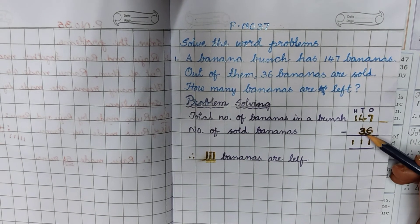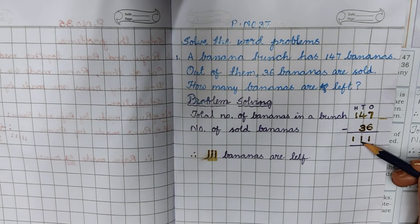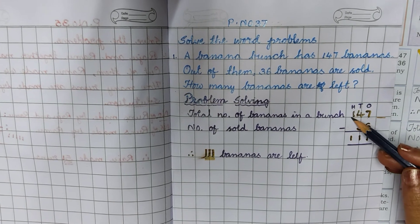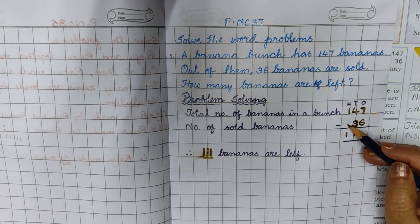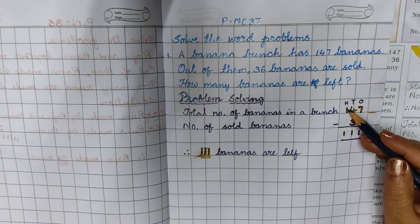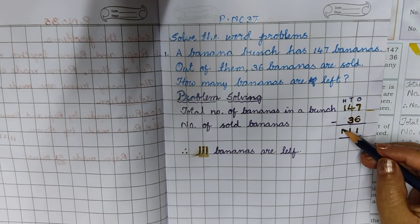4 minus 3, 1. And here in 100's place, any number is not there. So 1 only, right? 1 only.